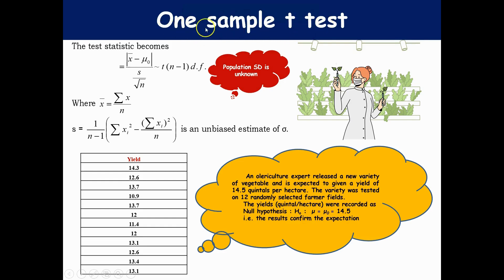The one-sample t-test is the basic foundation of hypothesis testing. It is used when the population standard deviation is unknown. The formula is: t equals the deviation of sample mean from its population mean divided by the standard error — that is, x-bar minus mu, divided by s over root n. It follows the t-distribution with n minus 1 degrees of freedom. First we compute the sample mean, then the sample standard deviation, which is an unbiased estimate of the population variance.